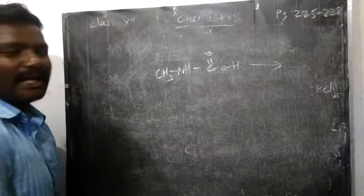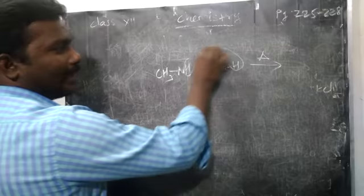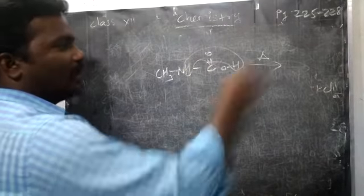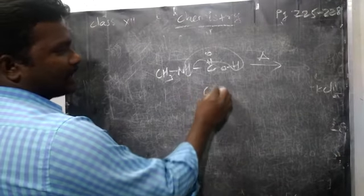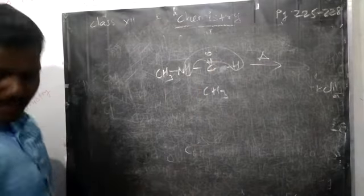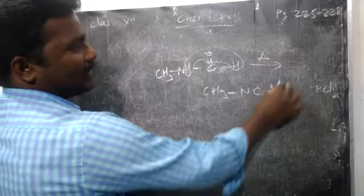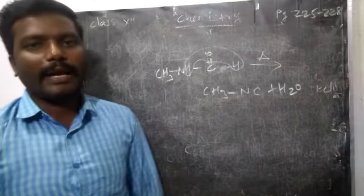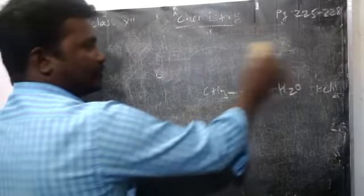Methyl formamide on heating will itself give water — 2 hydrogen and 1 oxygen — water will go out. What is remaining? CH3, and from formamide the O will come — CH3, N=C, plus H2O. So from formamide, we can prepare isocyanide. These are the three preparations of isocyanide compound.